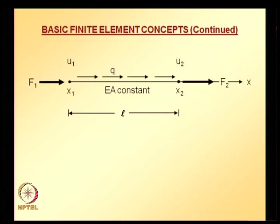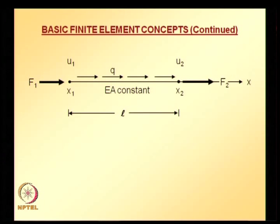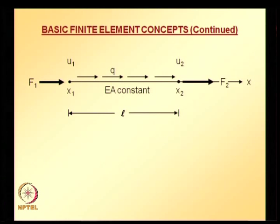Now the finite element equations can be derived using either Galerkin or variational method. A typical element is shown with point forces F1 and F2 at nodes 1 and 2. The sign convention: forces are positive in the direction of positive x. Nodal coordinates of node 1 and 2 are x1 and x2, q is the distributed load, E*A is constant, degrees of freedom are u1 and u2, and length of this typical element is L.